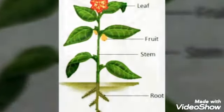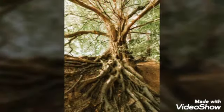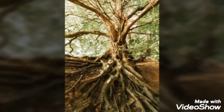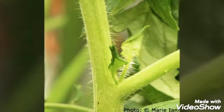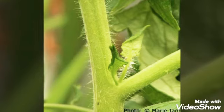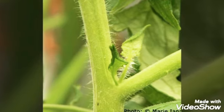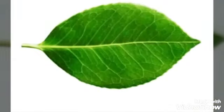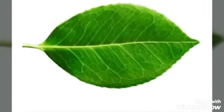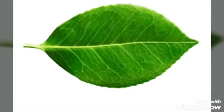The first one is roots. Roots emerge inside the soil, then the stems come, and the branches come after that.